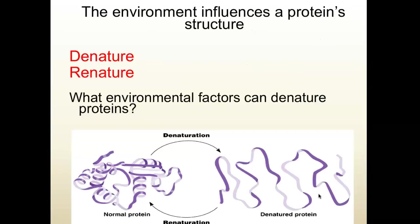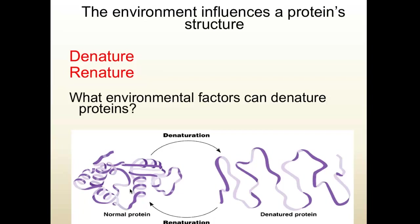Let's talk about the next couple of words: denature and re-nature. If we have the shape of a normal protein and you start to unravel it, that's called denaturation. If you denature a protein, you're unraveling and taking apart its three-dimensional shape. Proteins are very sensitive to their environment, and if you change the environment you can change the way the protein folds up. The environmental factors known to denature proteins are high temperatures, changes in pH, and changes in salt concentration.